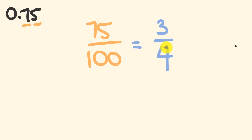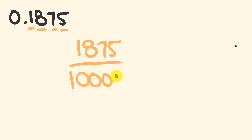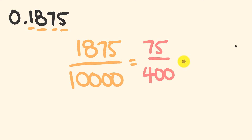For the next example, we're going to convert 0.1875 across to its equivalent fraction. Same method — we just write down 1875 and put that over a 1 with zeros: 1, 2, 3, 4 — so it's 1875 over 10,000. Now this can be simplified: 25 goes into both, giving 75 over 400. This can be simplified further — 25 goes into 75 three times and into 400 sixteen times, giving 3 over 16. That's how you convert terminating decimals into fractions.